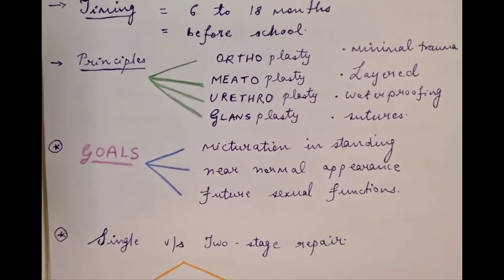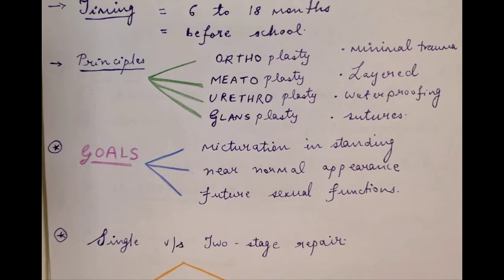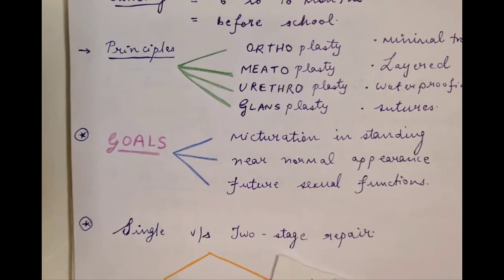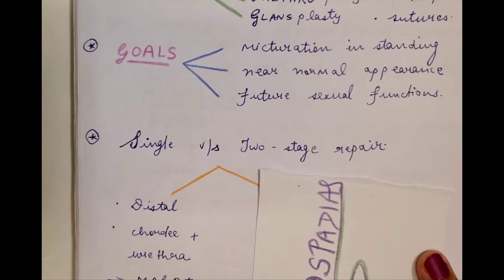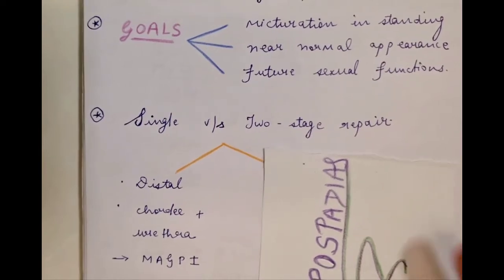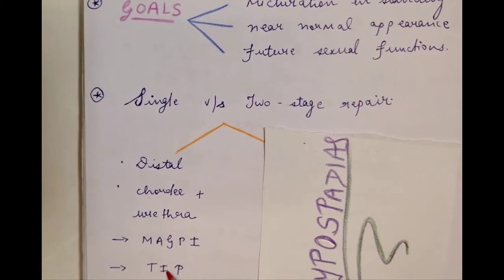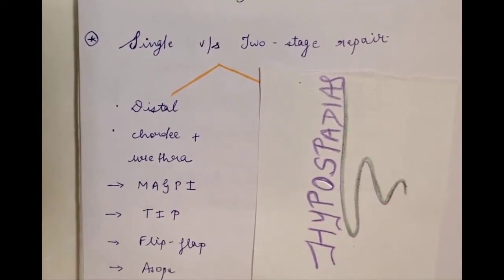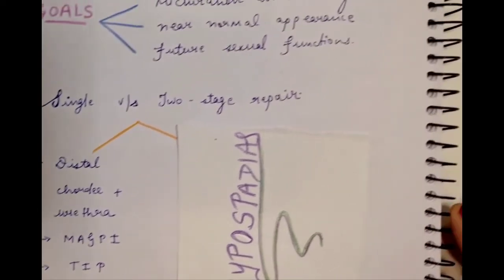The procedures available depend on whether they are single versus two-stage repair. If the hypospadias is a distal one, we can manage with a single repair wherein the chordee correction and urethroplasty are both done in a single stage, because you have sufficient tissues and the deficiency is less. The popular techniques for single-stage repair are the MAGPI — meatal advancement and glandsplasty incorporated, originally described by Duckett — and TIP, which is tubularized incised plate by Snodgrass, and the flip-flap procedure by Matthew and Asopa, one of the Indian techniques.